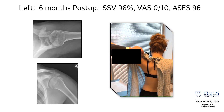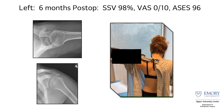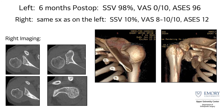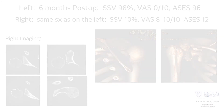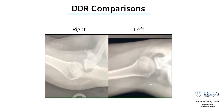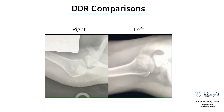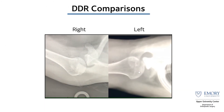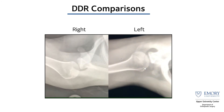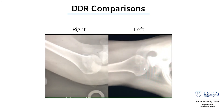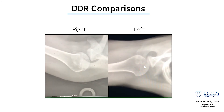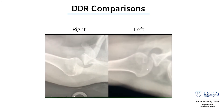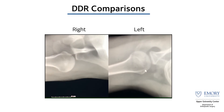Unfortunately, the same problem started happening on the right side, with basically the same imaging findings — posterior de-centering and inability to move her shoulder. The great thing was we had DDR on the left side, which we had already operated on with the latissimus transfer. You can see how we were able to re-center her humeral head on the operated left side.